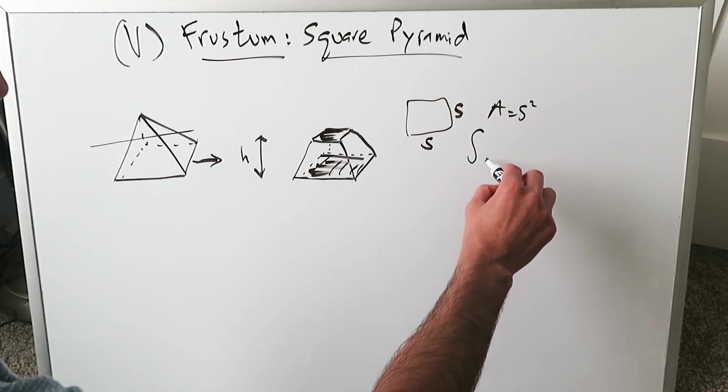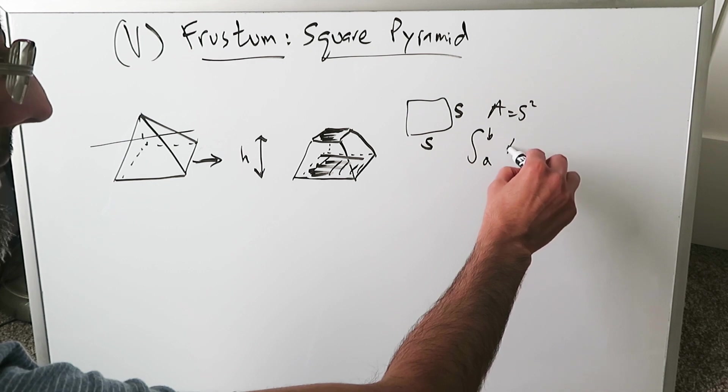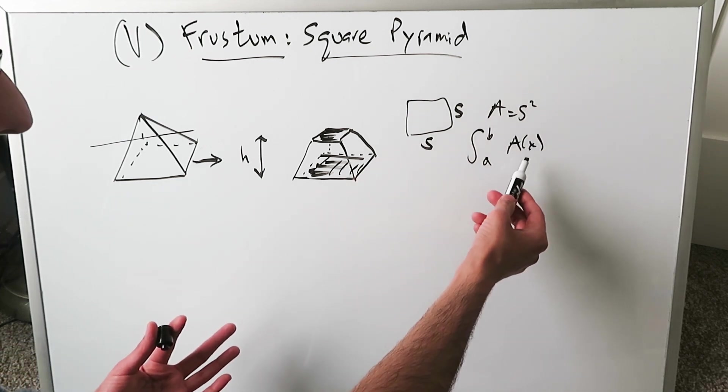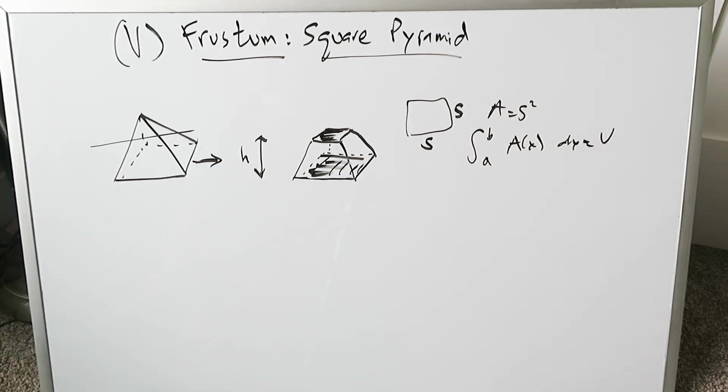If we can integrate from a lower limit, let's say A, to an upper limit B, the area with respect to X or Y, we can determine the volume easily. And that's how we would do it.